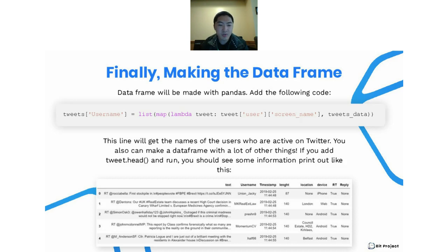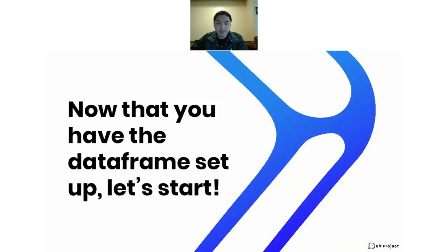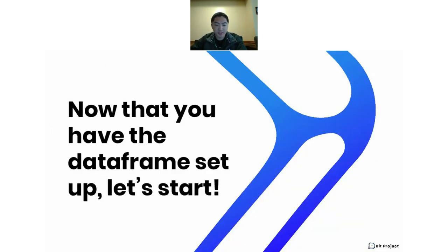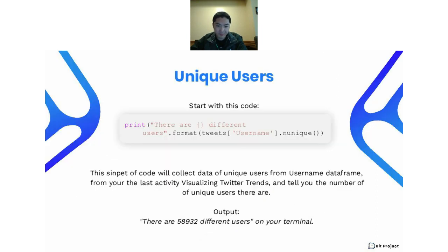To clarify, this code only initializes one column of a data frame — it's the username column. If you want to initialize all the other columns, you're going to have to do a bit more work; this is just one example. If you add in other information, the data frame should look like a proper table. Now let's start working with the data. We'll take our data frame — I called it 'tweets,' you can call it whatever you want — and we take the username attribute and find the number of unique users using the 'nunique' function. It should output something like 'there are X different users' on your terminal.